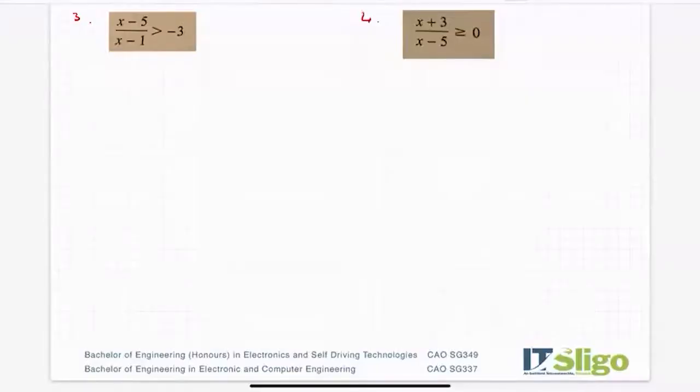Right, let's have a look at the inequalities that have fractions in them. So the first one there, x minus 5 over x minus 1 is greater than minus 3. So how do we solve this inequality?